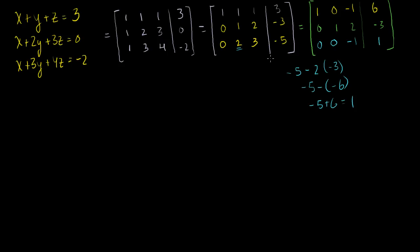I'm almost done, but I'm still not in reduced row echelon form. The pivot entry in the third row has to be a positive 1 — that's a requirement of reduced row echelon form. And then the entries above it have to be zeroed out. The easy thing to do is multiply this row by minus 1, so the minus 1 becomes plus 1, and the 1 becomes minus 1. The third row is now 0, 0, 1, minus 1.